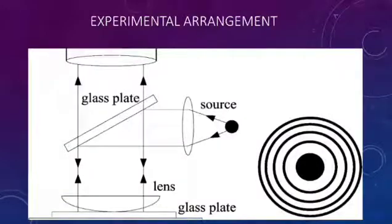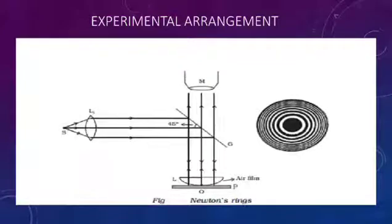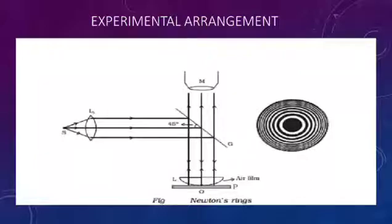This is our experimental arrangement. In the figure, S is a monochromatic source of light, L1 is a convex lens, G is a glass plate, and P is a glass plate. We focus on the plane of the convex lens, the air film, and the light rays.